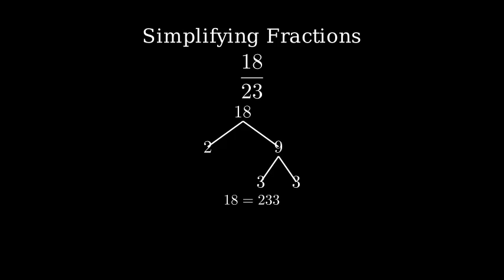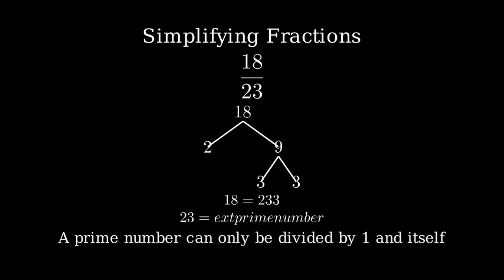Let's start by finding the factors of 18. Now let's look at 23. 23 is actually a prime number, which means it can only be divided by 1 and itself.